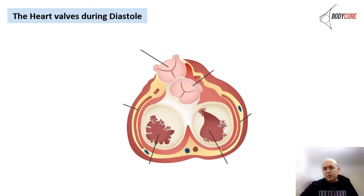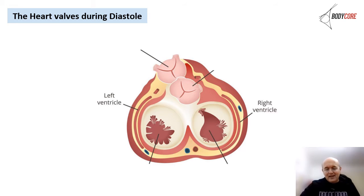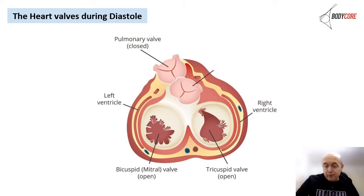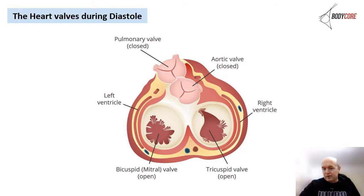During diastole, the aortic valve and the pulmonary valve are shut — nothing should get out, because the heart wants to fill the chambers with blood before contracting. Looking at the heart valves during diastole: the bicuspid and tricuspid valves are open, while the pulmonary valve and aortic valve are closed.